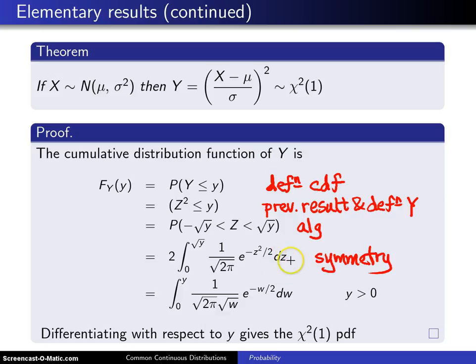A substitution has been made here: w equals z², so dw equals 2z dz. When you make this substitution, you wind up with an integral running from 0 to y of this integrand.